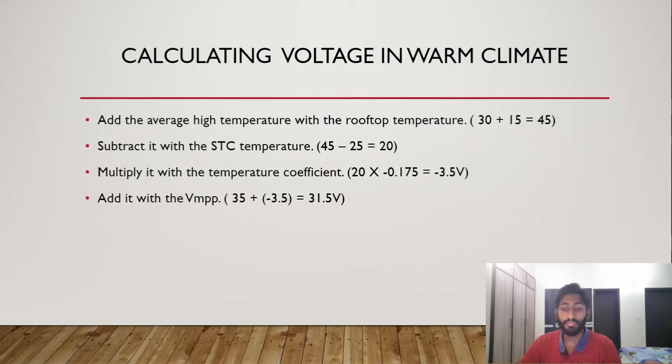Multiply that again with the temperature coefficient of minus 0.175. The new voltage is minus 3.5 volts. Adding with the Vmp of 35 volts with the lower value, now decreased to 31.5 volts. It makes sense because at warmer temperatures as you increase the temperature, the voltage levels will decrease. In this case it has decreased.